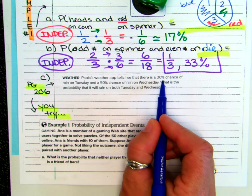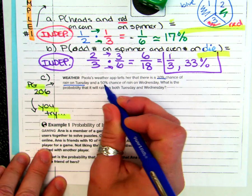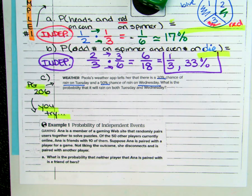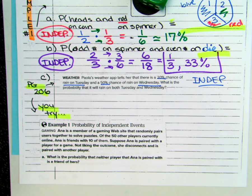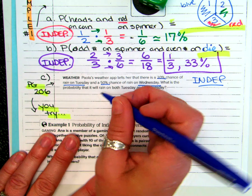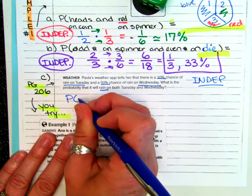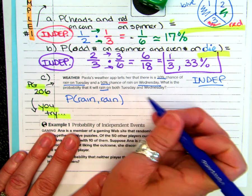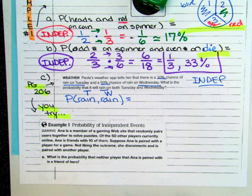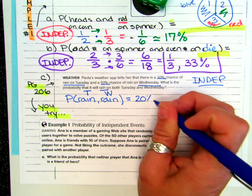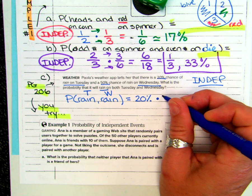P's weather app tells her there's a 20% chance of rain on Tuesday and a 50% chance of rain on Wednesday. Would it raining on Tuesday be affected by whether it's going to rain on Wednesday? No — those are separate days. So the first thing you do is say that's independent. If it rains on Tuesday, that does not mean it's going to rain on Wednesday. What's the probability that it will rain on both days? Probability of rain — Tuesday — and rain — Wednesday. What is the probability of rain on Tuesday? 20%. On Wednesday? 50%.